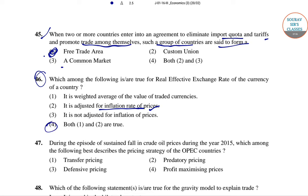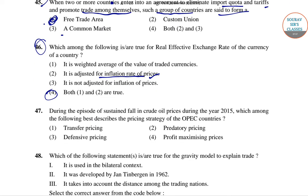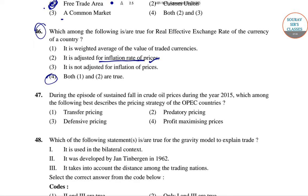Question 47: During the episode of sustained fall in crude oil prices during 2015, which among the following best describes the pricing strategy of OPEC countries? The right answer for question 47 is option 3.